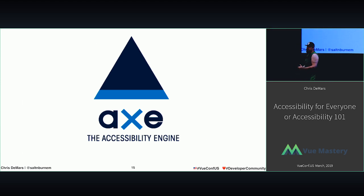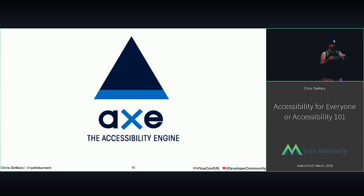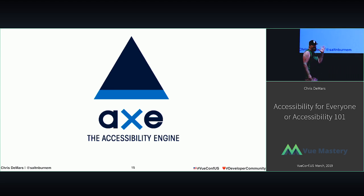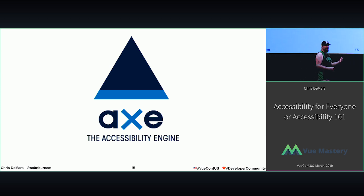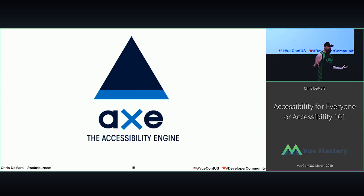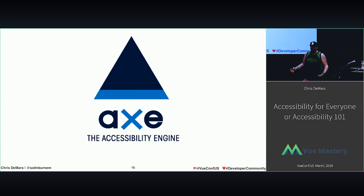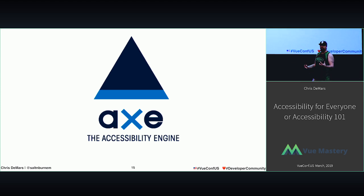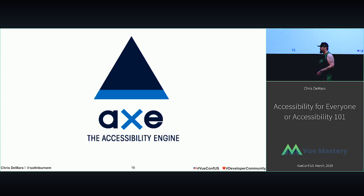Axe Core is an amazing tool. You can use it in browser extensions for Chrome and Firefox, or run it in end-to-end testing suites using Mocha, Jasmine, whatever the case may be. It will give you an audit on your experience, tell you how to fix it, and where the issues lie. It'll catch 20 to 50% of all your issues. To get the rest, you manually test — take your mouse away, use a keyboard, use a screen reader. Axe is a great tool you should have in your tool belt.